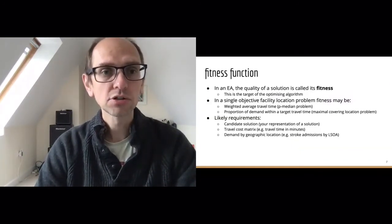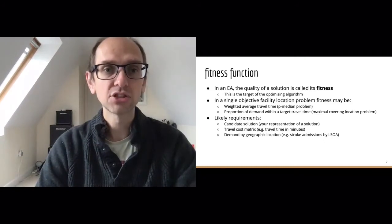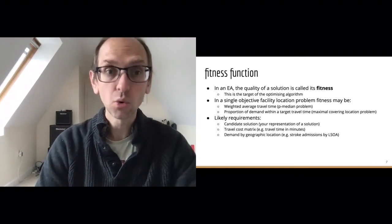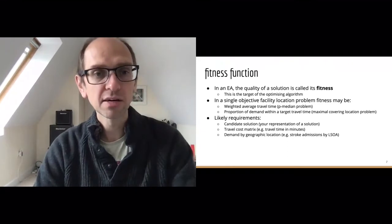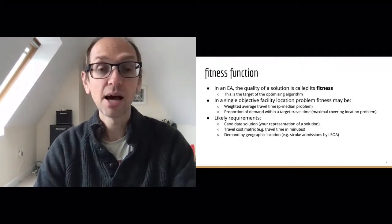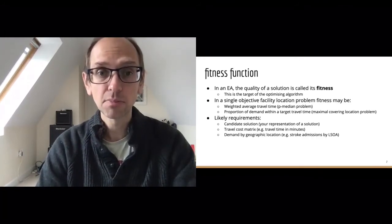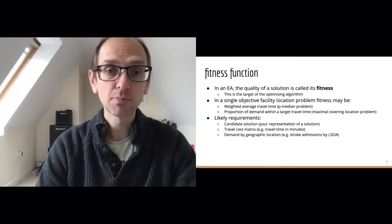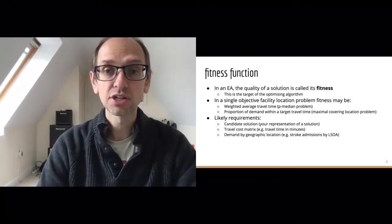When using evolutionary algorithms, we use a slightly different terminology — we talk about the fitness of a solution, meaning its quality or cost. That is the target the algorithm is trying to optimise against. In the sexual health example with a single objective, that might be the weighted average travel time as in the P-median problem, or the proportion of demand within a specified target travel time as in the maximal covering location problem.